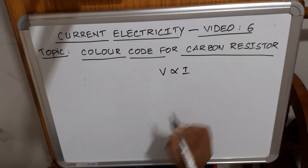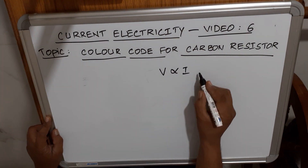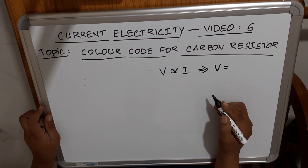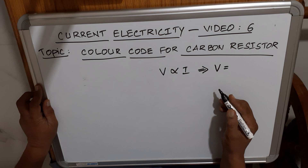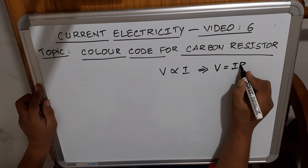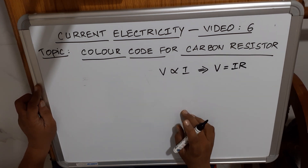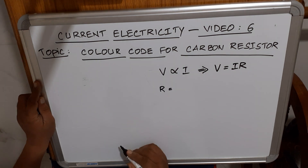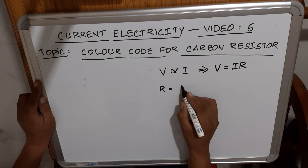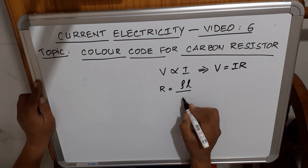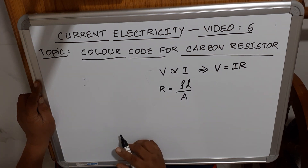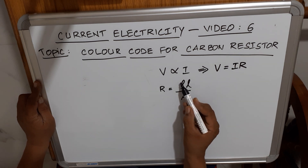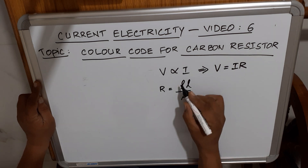We have explained V proportional to I, so we replace the proportionality symbol with a term known as resistance: V = IR, where R is resistance. Resistance depends on length, cross-sectional area, material, and resistivity (ρ).